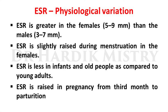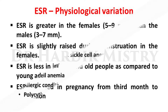ESR is greater in females (5 to 9 mm) than males (3 to 7 mm). ESR is slightly raised during menstruation in females. ESR is less in infants and old people compared to young adults. ESR is raised in pregnancy from the third month to parturition. These are the physiological variations of ESR occurring in normal healthy conditions.